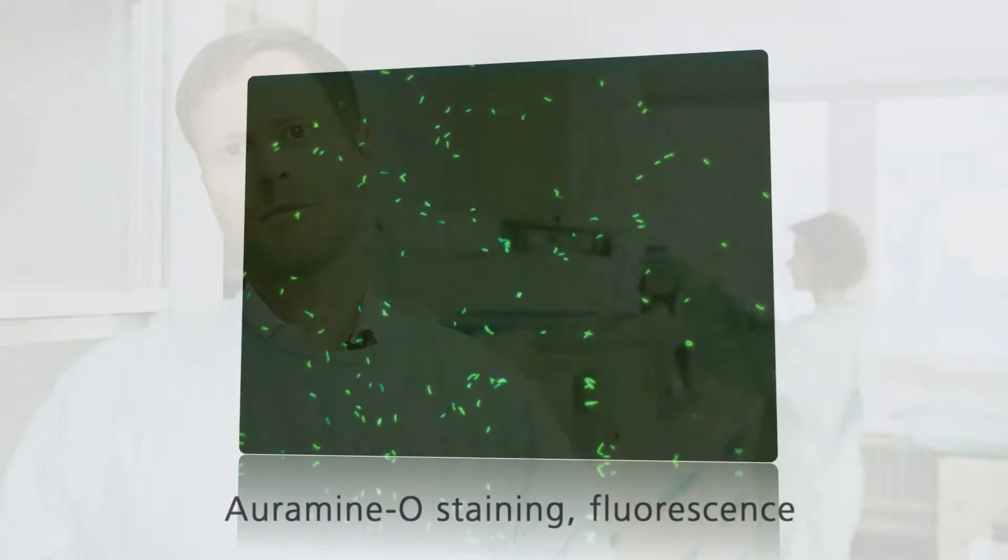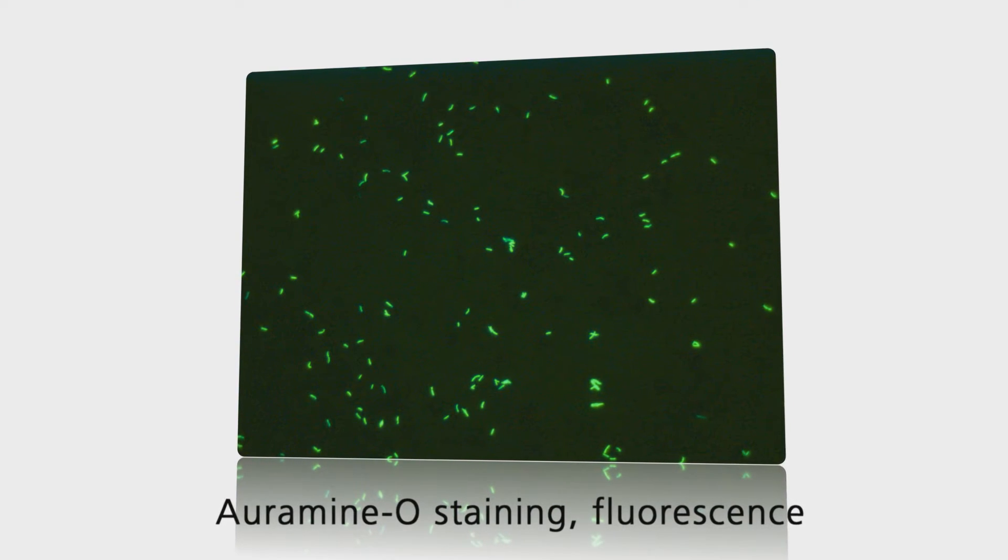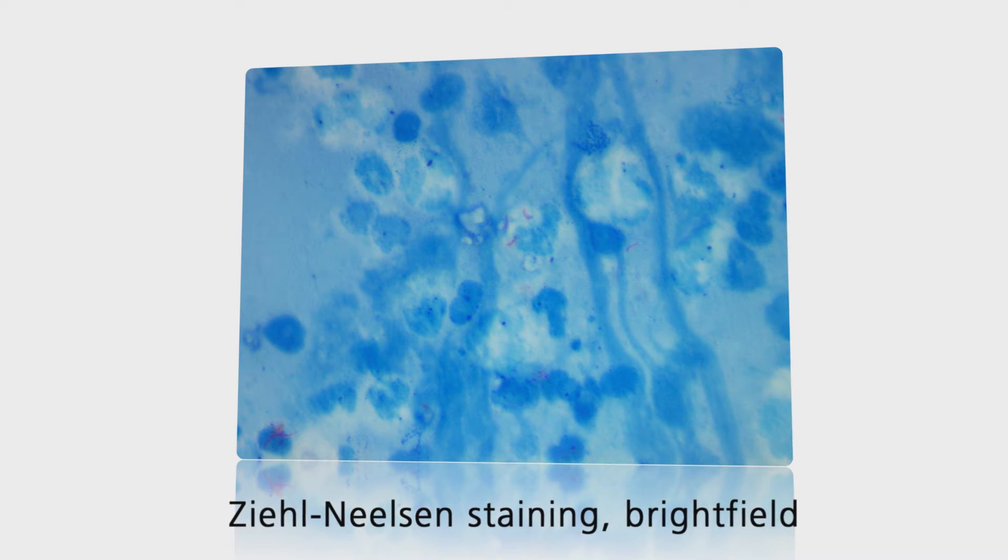You can easily detect the tuberculosis bacteria at a glance by staining preparations with Oramine. This process is much easier than using conventional Zeal-Nielsen staining.